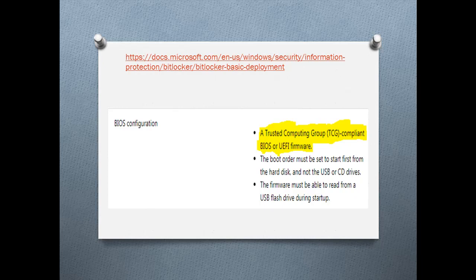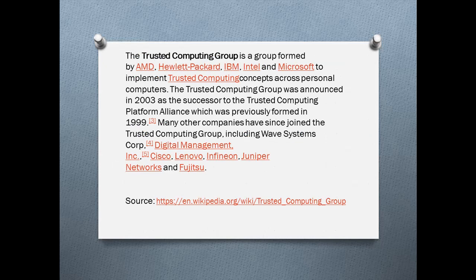Looking at Wikipedia with a small search, you can find information about the TCG. The Trusted Computing Group is a group formed by AMD, HP, IBM, Intel, and Microsoft to implement trusted computing concepts across personal computers — something called a TPM, which we will talk about another time. The Trusted Computing Group was announced in 2003.